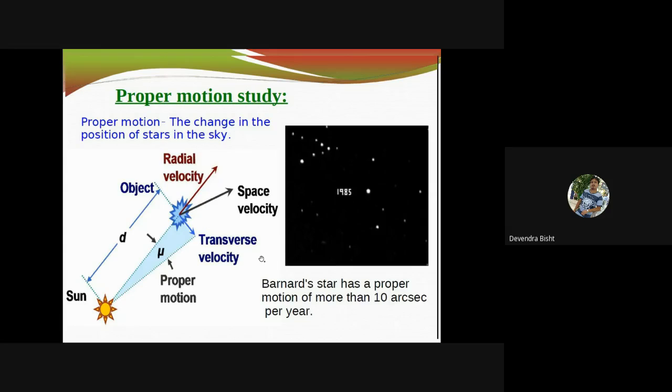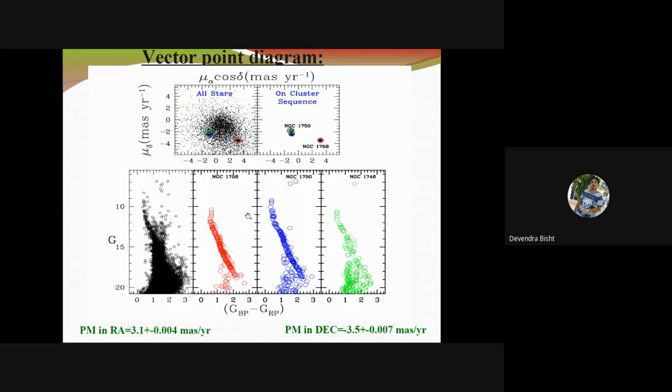This is the importance of proper motion data. The other important implication is we have made a vector point diagram of this object. We are studying in this area, and here we saw so many clusters. Today I am discussing this object inside the red circle. Near to this object, two open clusters are also overlapping. The corresponding color magnitude diagram of these stars you can see here for NGC 1758.